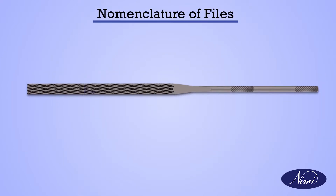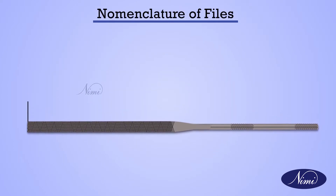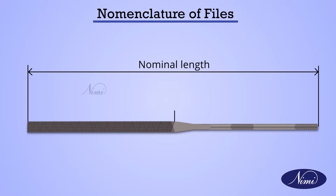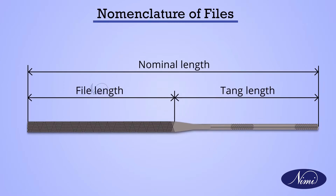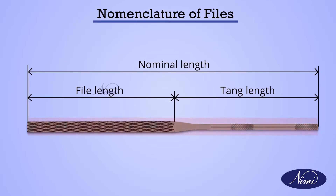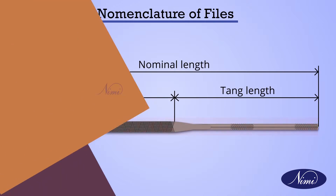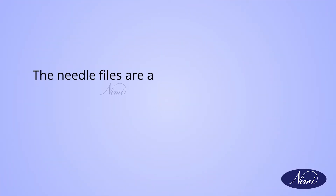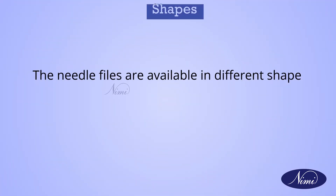Regarding the nomenclature of files: the total length, including the tang length, is taken as the nominal length of the file. The tang length is separate from the file length. Needle files are available in different shapes.